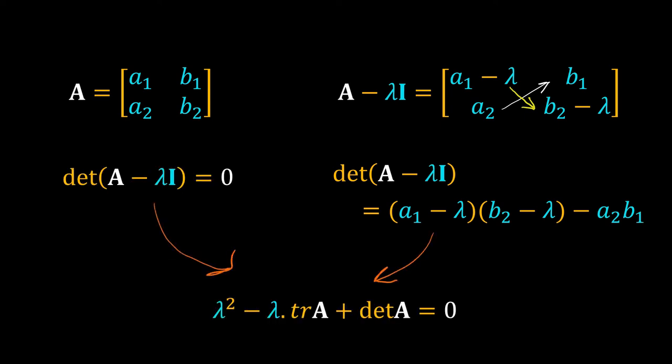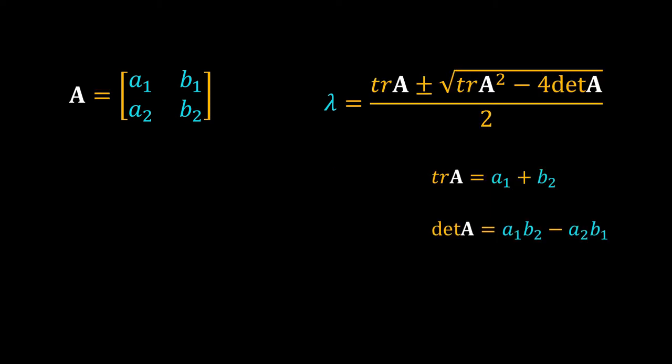Setting the determinant equal to zero, we get a quadratic equation for lambda. Solving this equation, we get the eigenvalues of the matrix. It is easy to get the roots of a quadratic equation. So lambda is equal to trace of A plus minus root of (trace of A squared minus 4 det A) divided by 2.